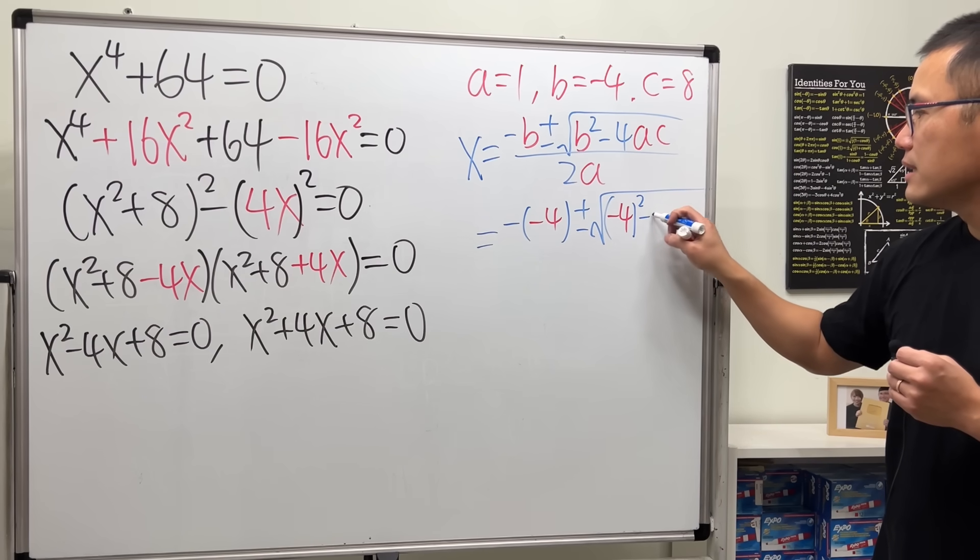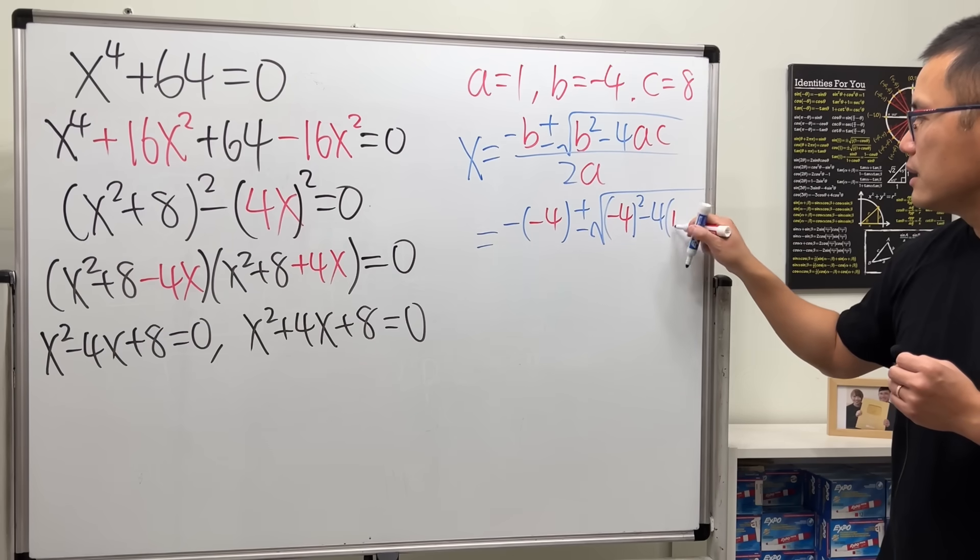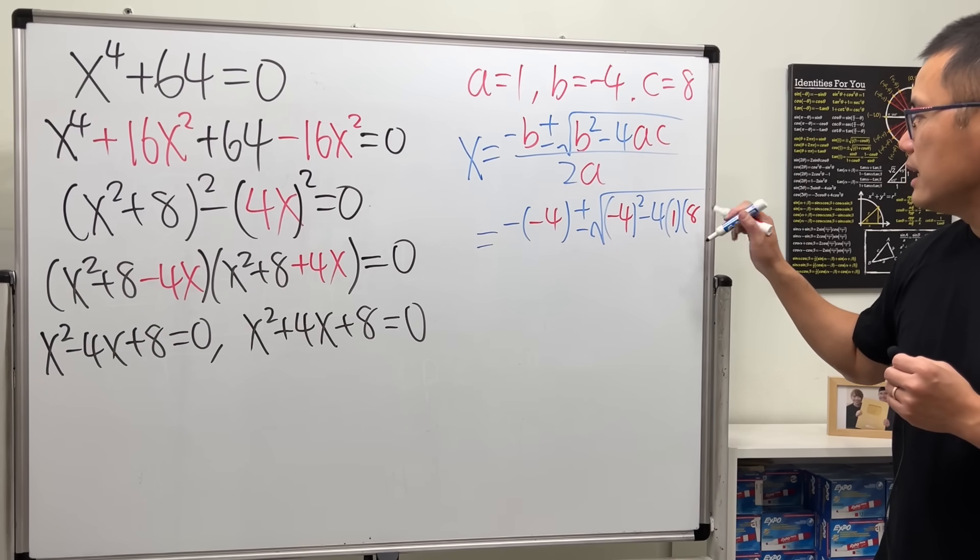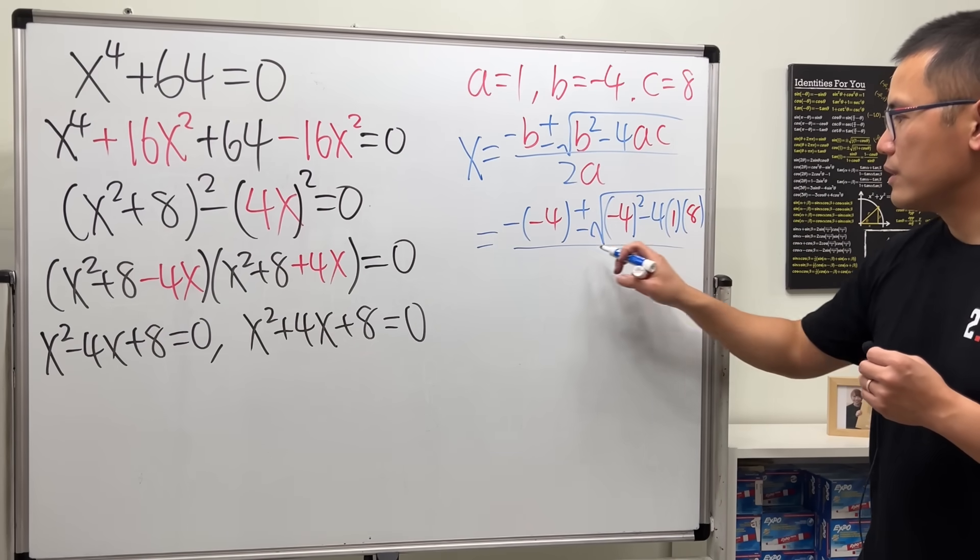Minus 4a is 1, and c is 8, all over 2 times 1.